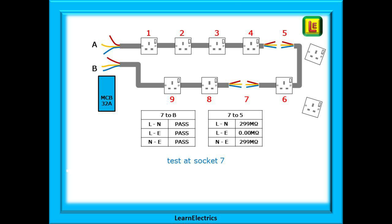Divide the circuit again, this time remove socket number seven. Test from seven to cable B and all passes. Test from seven to five—live to earth fails again. That just leaves socket number six to remove and test. A test from six to seven passes, but a test from six to five fails again. This means that the fault must be in the cable between socket five and socket six.